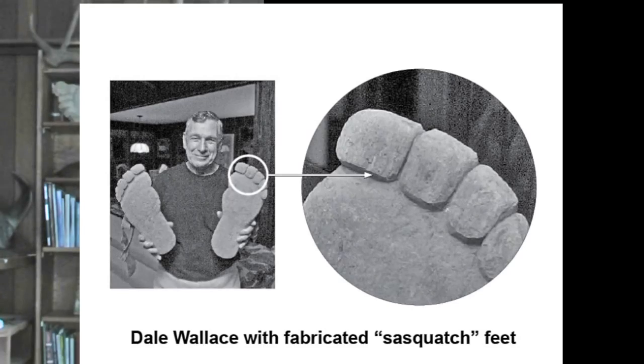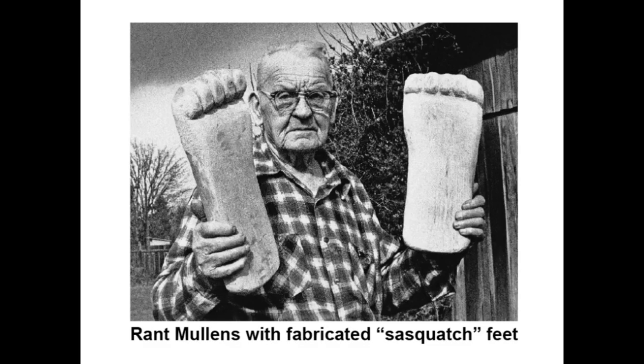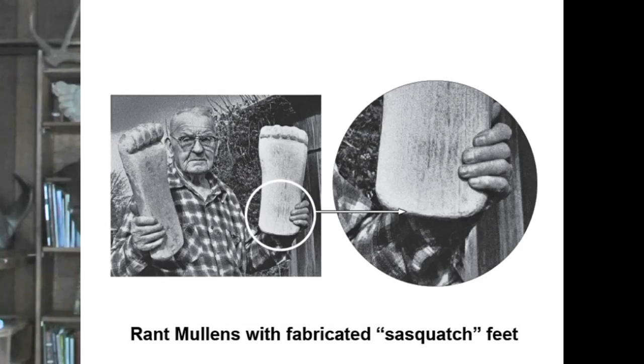Let's look more closely at the evidence brought forward for the Sasquatch as a hoax. Here we have Dale Wallace holding these fabricated wooden feet. Look at the toes more closely — the toes are square. The hoaxer hadn't even bothered to round off the toes. Let's look at another fabricated foot example, this one from 1982. Grant Mullins brought forward some carved wooden Sasquatch feet, and once again the heel is square — he hasn't even bothered to round it off. Sasquatch scientists who are not stupid have accepted the hoax hypothesis and regularly tell me that hoaxes explain the Sasquatch. Well, no — hoaxes do not explain Sasquatch tracks, at least not according to the evidence that was so widely accepted in 2002.